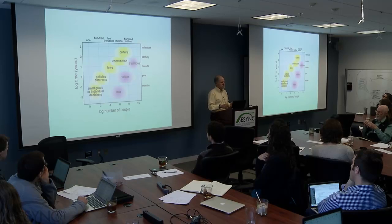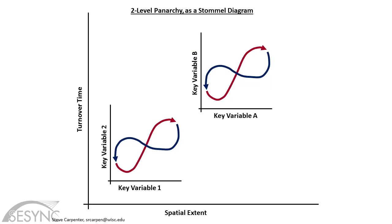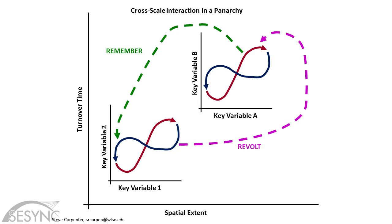Scaling in terms of number of people and the persistence time of an entity is potentially useful for thinking about social systems. So this led to an elaboration of the adaptive cycle called the panarchy — you can imagine multiple adaptive cycles at different spatial extents and turnover times, and they can be connected in various ways.